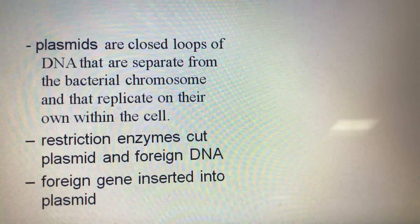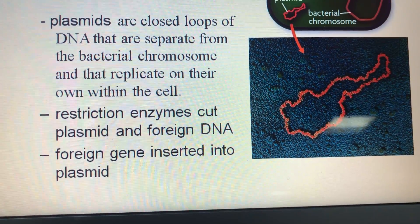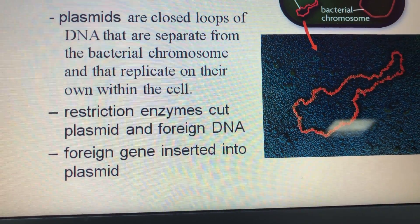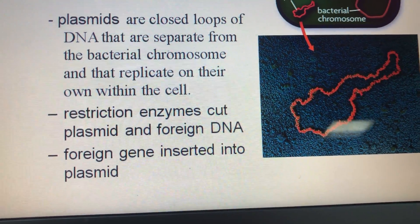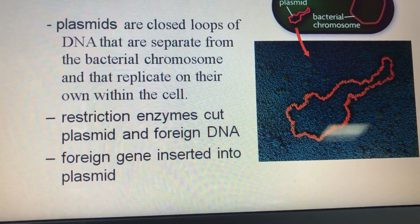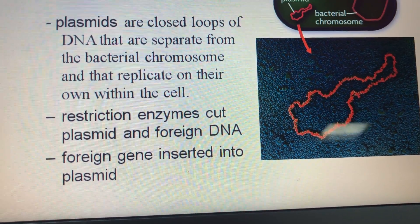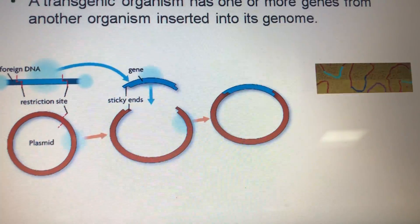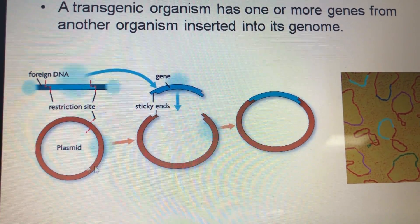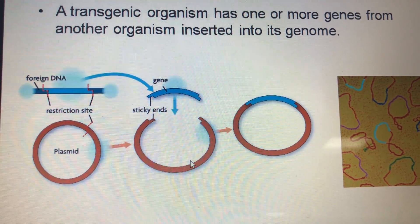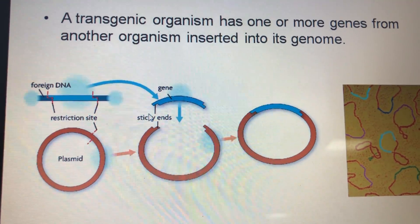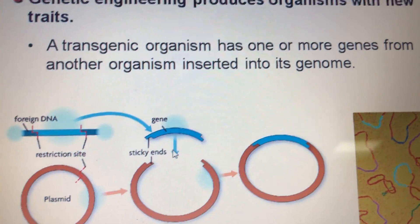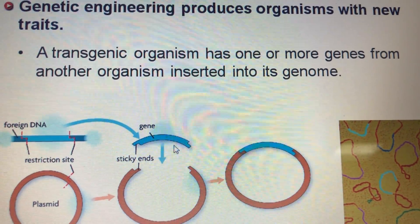These plasmids are enclosed loops and must be cut by restriction enzymes — both the foreign DNA gene and the plasmid of the bacteria are cut by the same restriction enzymes.